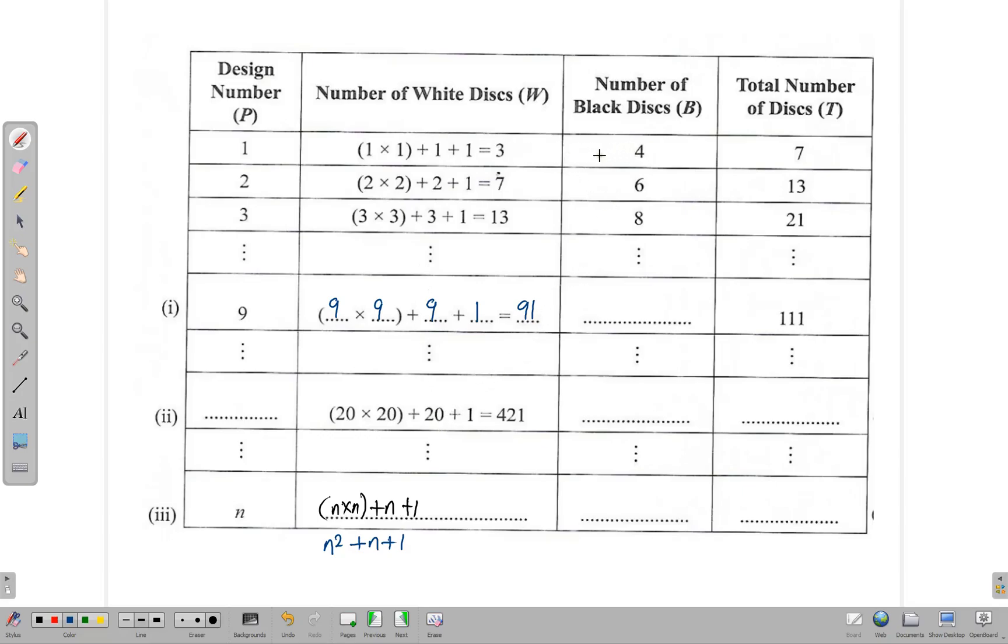Now here, notice that there is a common difference between these numbers. So four, six, eight, we're adding two. And when we're using a common difference, it's always useful to just multiply the design number by the common difference. So if we multiply two times one, we get two. But our answer here is four, which means that we're adding something to get our answer. So we say two plus two will give us four. If we add two to our two, we get four. Let's try that pattern and see if it works here. So we say two times two. Two twos are four. If we add two to it, we end up with six. And if you try it again, two times three, that's six, plus two, eight. So you notice that your pattern here is saying two times whatever n is, plus two more, gives you the generalization for the number of black disks.